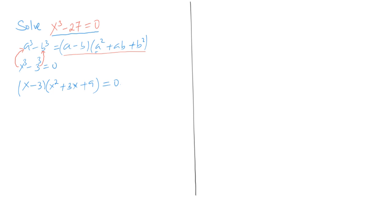We have two distinct factors here: x minus 3 on one hand, and x squared plus 3x plus 9 on the other. The product of these two numbers is equal to 0, and for that to be possible then either or both of the two numbers must be equal to 0. So we equate each of them to 0. The first one: x minus 3 equals 0, which gives us x is equal to 3. That is our very first solution — the first root of this cubic equation.